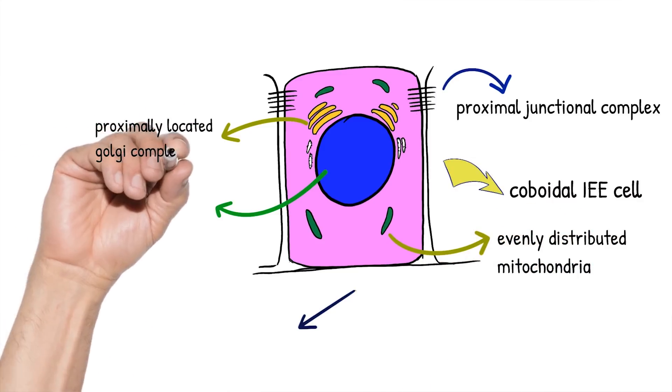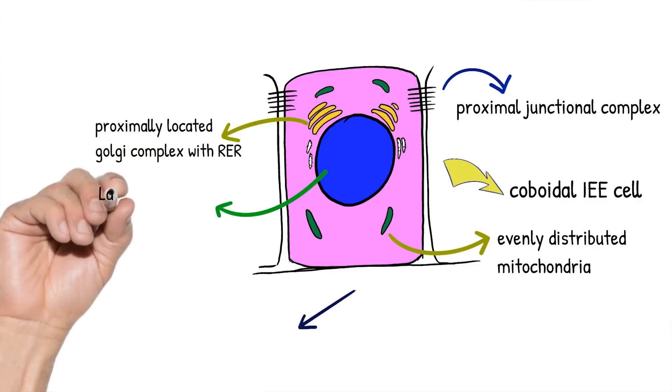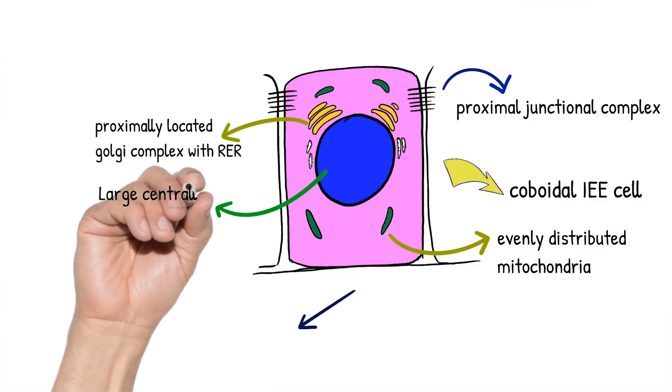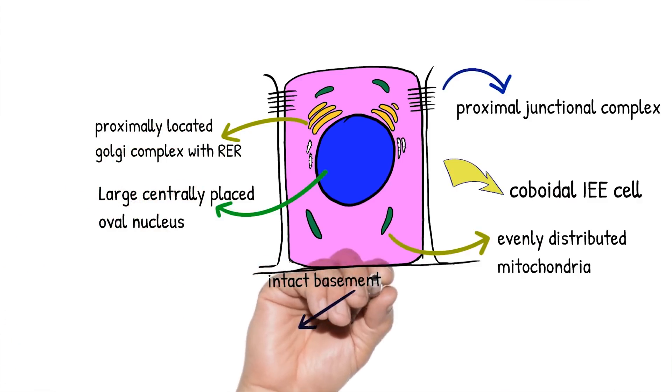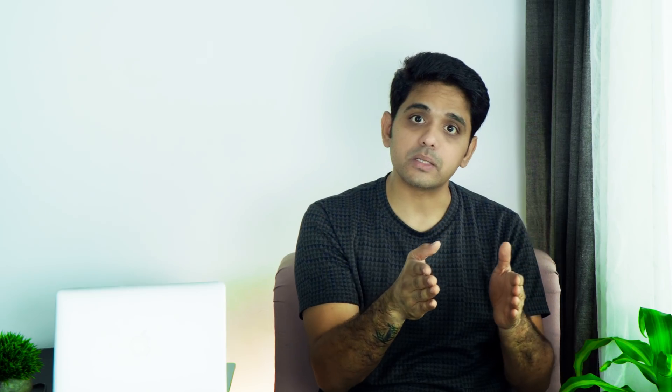During the transition from the morphogenetic stage to the next stage, cell junctions called terminal bars appear near the proximal end — that is, towards the stratum intermedium — along with migration of the mitochondria towards the proximal portion of the cell, whereas before they were evenly dispersed.